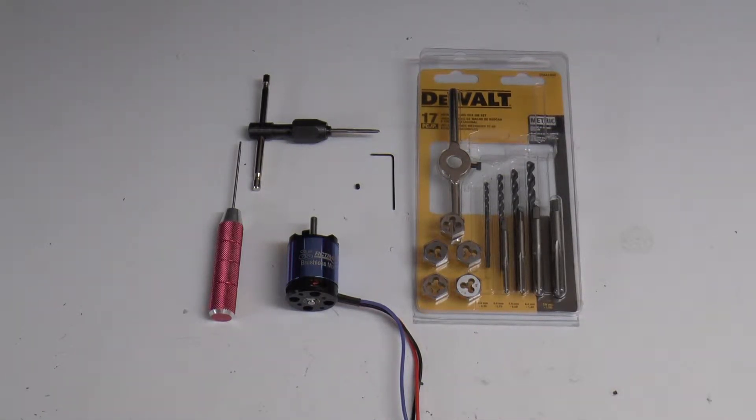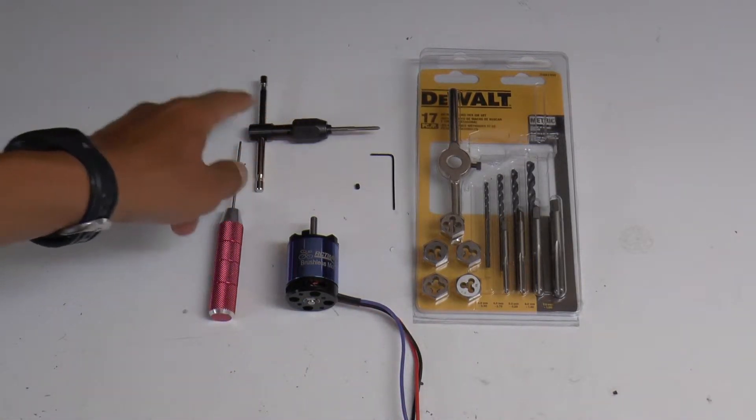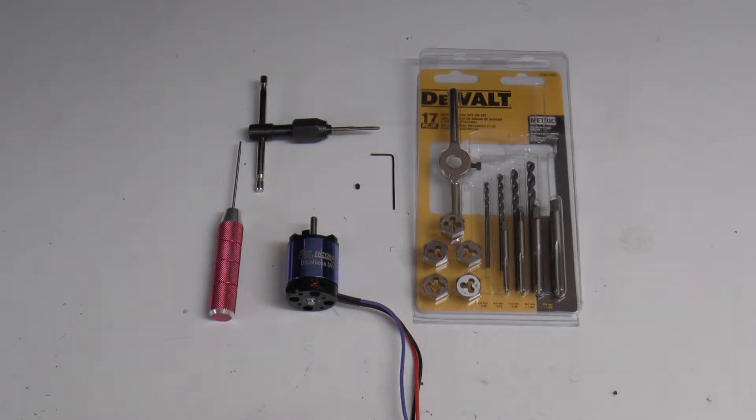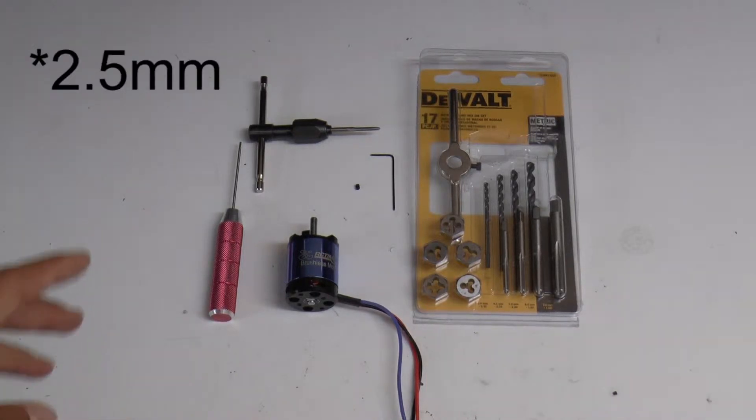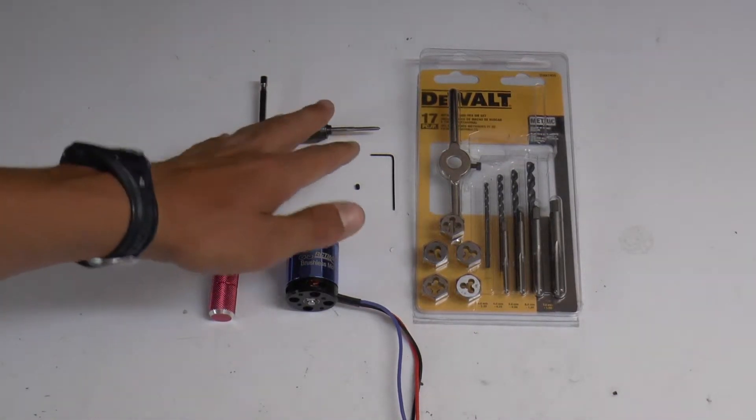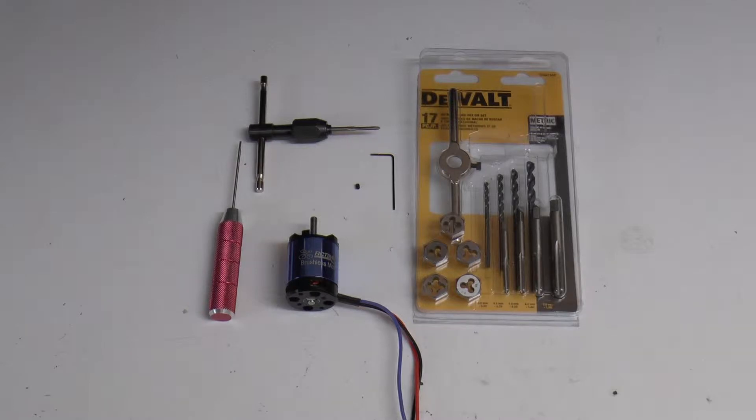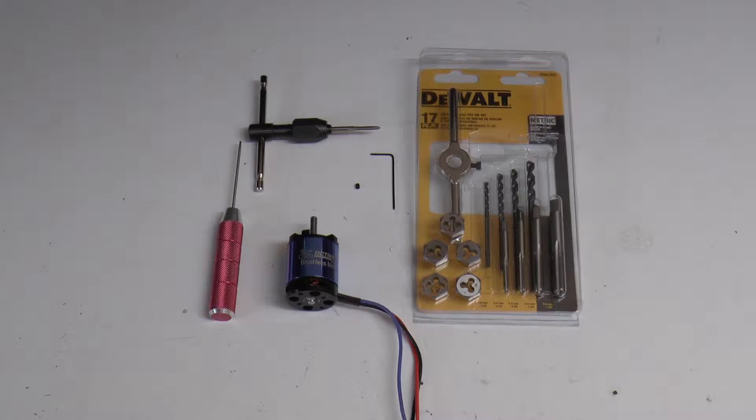I saw that Tower Hobbies even has one of these sets on their online store. So what you're going to want to do is get a 3mm tap, which is what this is. You're going to need a tool to hold that bit, and then you're also going to need a 2.5mm drill bit to drill out the hole for the tapping bit. But if you buy a kit, you're going to get not only the bit but also the tap. So let's get started on this project.